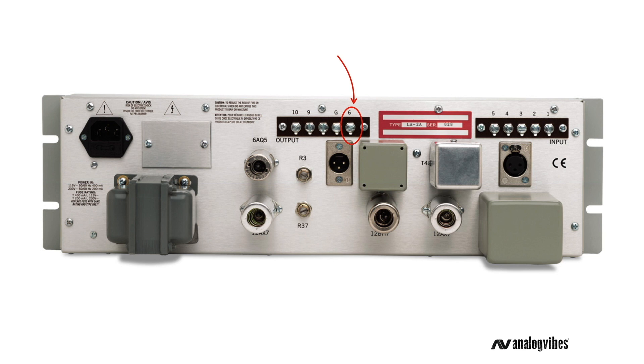More precisely, this allows for both LA2As to see the same gain reduction control voltage. And R3 pots on both units are there to adjust the voltage applied to the 6aq5 tubes of both units, until the compression is equal on both channels. I'll explain the matching procedure in more detail later.